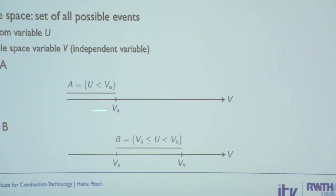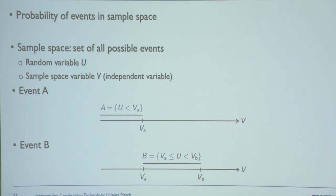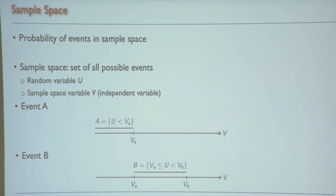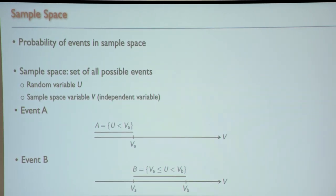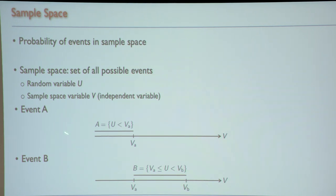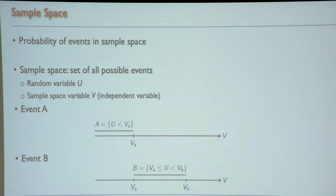We introduce the sample space — the velocity space against which we compare our experiment. Rather than asking what is the probability the velocity is exactly 5 m/s, we can ask: what is the probability the velocity is less than 5 m/s? That's an event, and from many measurements each giving a true or false answer, we can compute the probability.